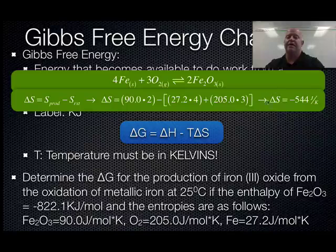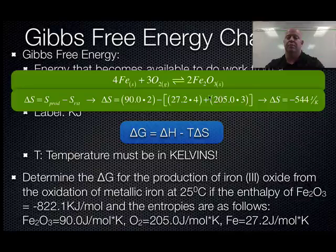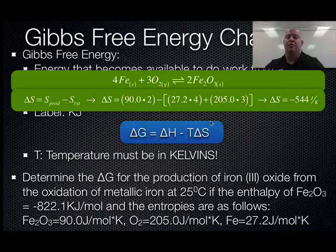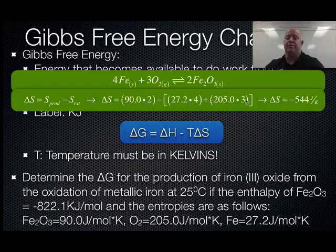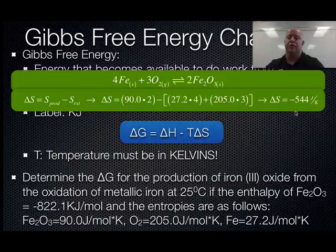We end up getting a change in entropy of negative 544 joules per Kelvin. Notice that the mole unit for entropy goes away, because you had joules per mole·Kelvin, and since we're multiplying by 2 moles, 4 moles, and 3 moles, we lose the mole label. So the answer is negative 544 joules per Kelvin — not kilojoules.